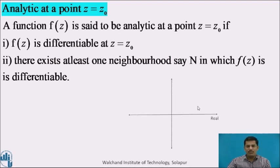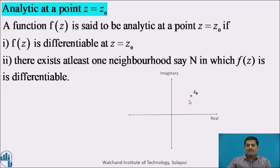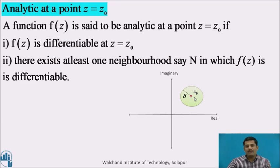Let us understand this definition geometrically. This is a complex plane and let us consider this point as z0. To say that the function f of z is analytic at this point, the function must be differentiable at this point, and around z0 we can find at least one neighborhood. In complex analysis, the neighborhood is a circular disk with some radius delta. We can find at least one such circular disk in which f of z is differentiable. If this is not possible, the function is not analytic at z0.